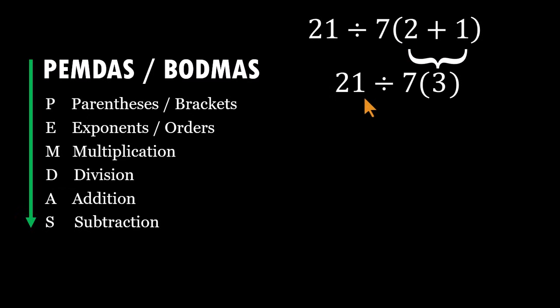So rewrite the entire expression as 21 divided by 7 times 3. This is where many answers go sideways. People rush and think multiplication comes first. So they do this. 7 times 3 equals 21. Now it looks like 21 divided by 21. That gives 1, neat, simple, and wrong.